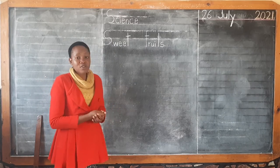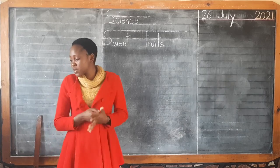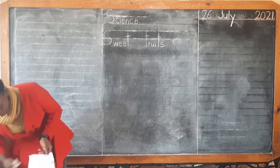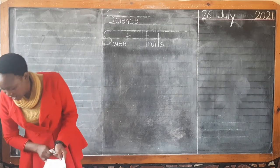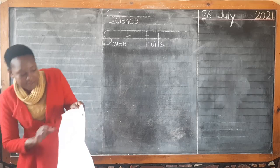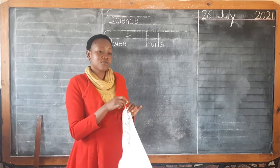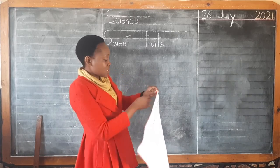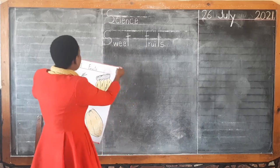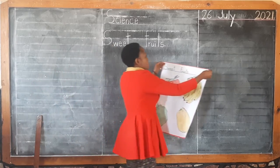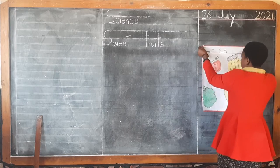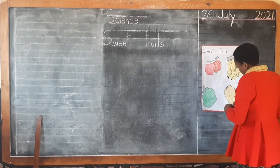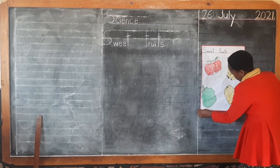So we are looking at sweet fruits. I am going to show you something. I have a chart in my hands, and this chart is having some of the fruits that we know. These are sweet fruits. On our chart here we have sweet fruits, and I am sure we can all see the sweet fruits on our chart.